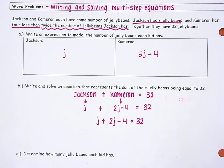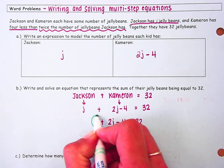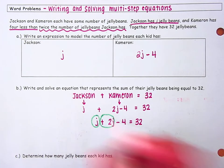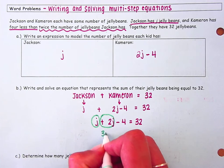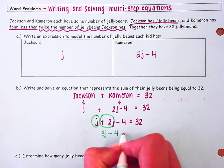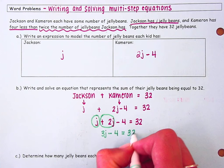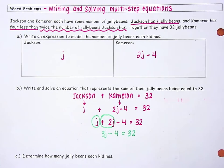When we solve multi-step equations we want to simplify anything that we can first by either combining like terms or using the distributive property. In this case I see J and 2J that I can combine. So I have 3J minus 4 is equal to 32. And now we have an equation we can solve.